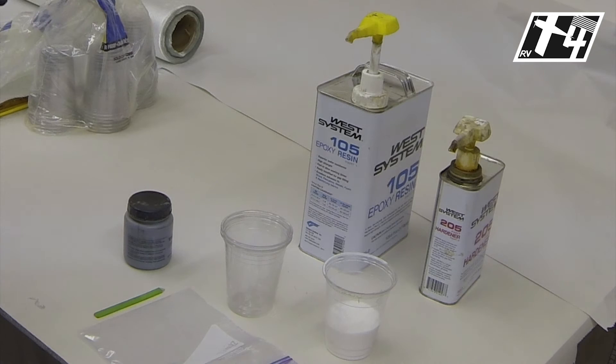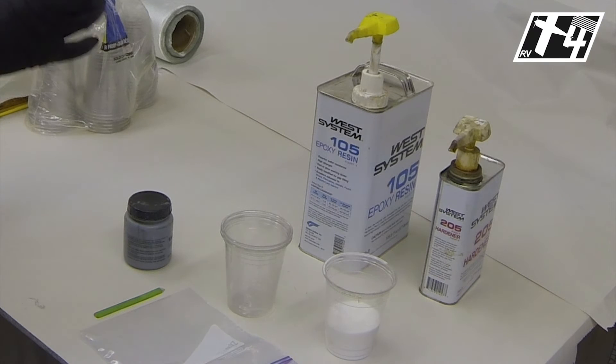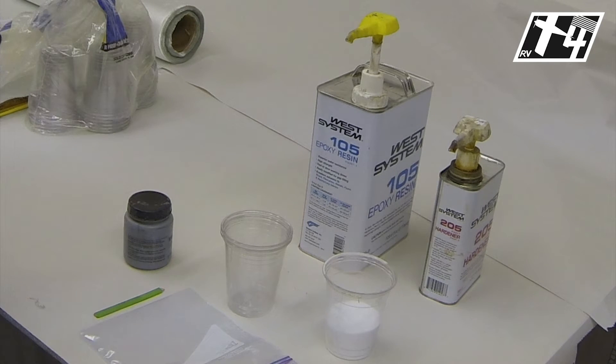You can use a lot of other things for cups too, like saving little cups from yogurt, that sort of thing and use that as your mixing cup. Those usually do fine with the resin.